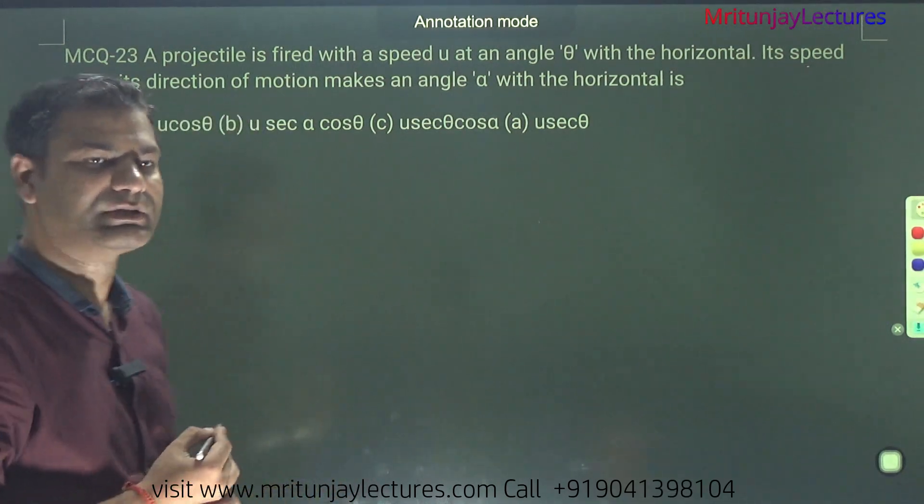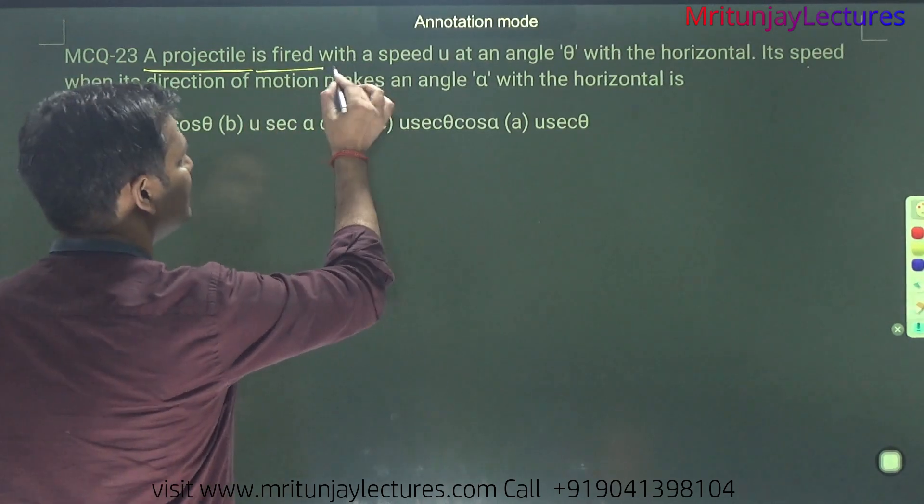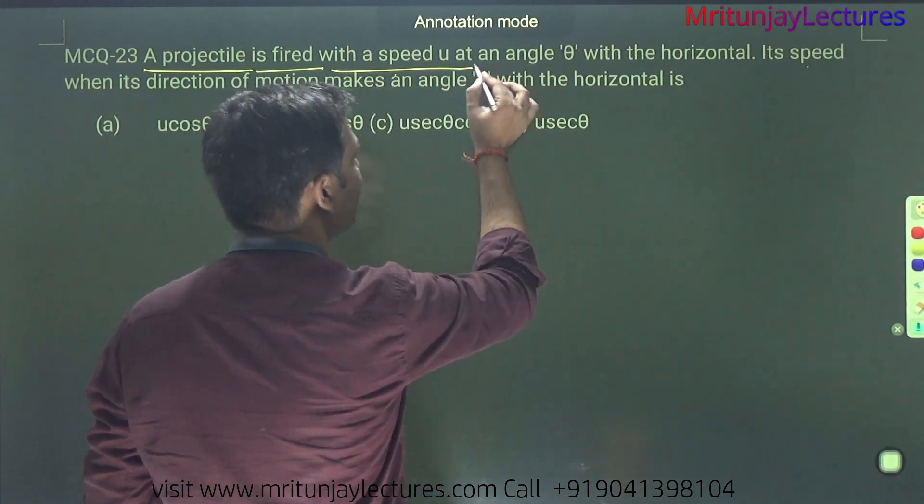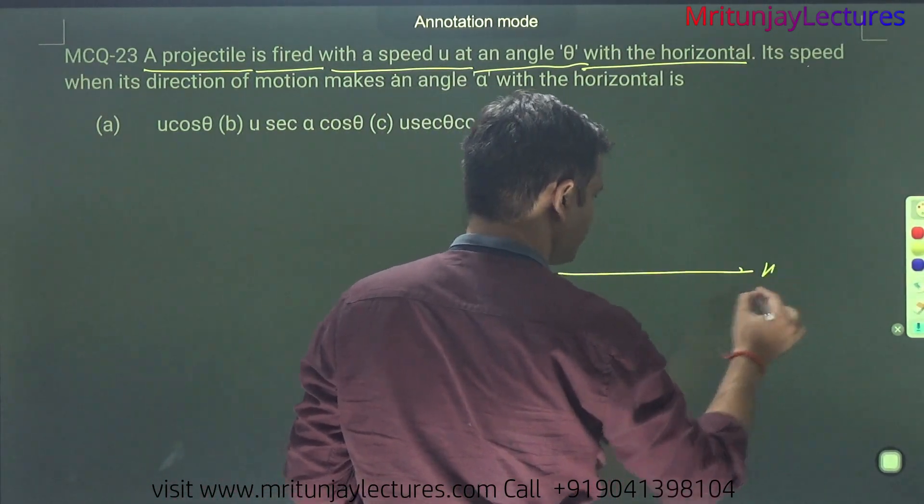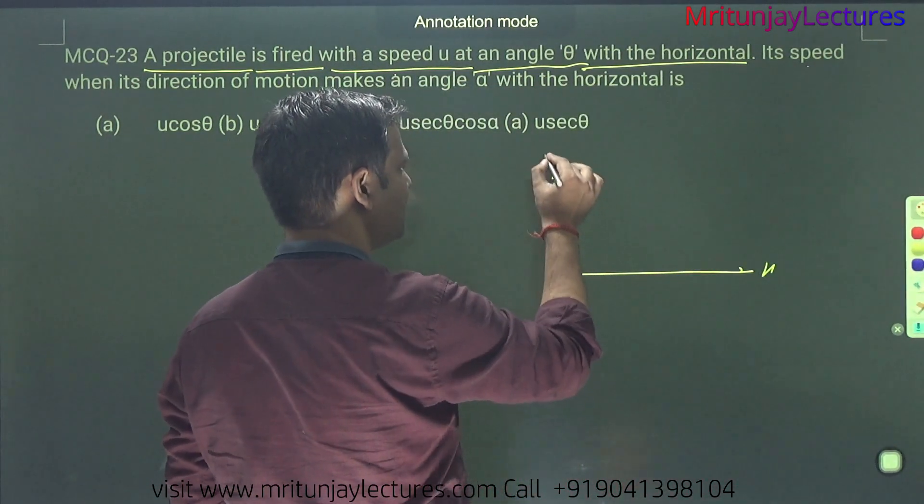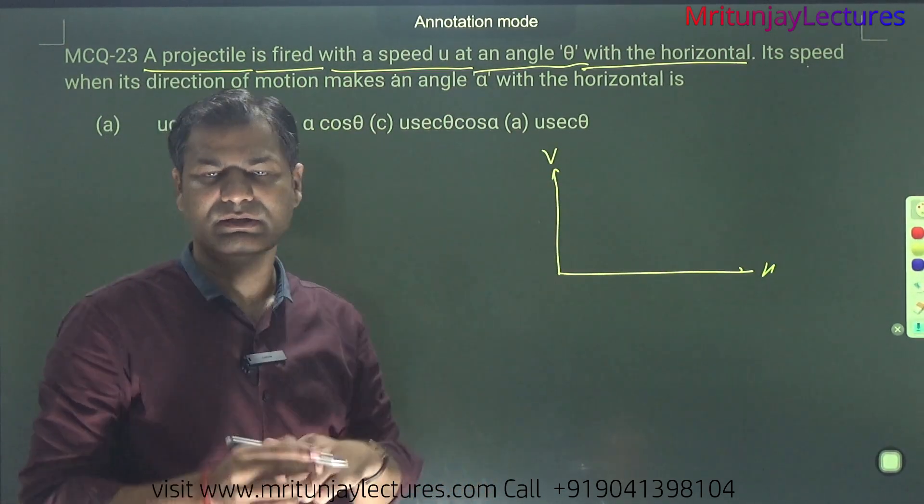Now, corresponding to this question, first of all read the question. A projectile is fired with speed u at angle theta with the horizontal. I know that this is horizontal and that is vertical. This is the horizontal and that one is vertical representation.